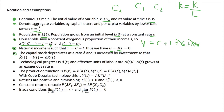We assume that the capital stock depreciates at a constant rate sigma and is increased by investment. The change in capital over time equals investment in that period minus depreciation of the existing capital stock. We can also write this as the law of motion of capital: the capital stock at time t+1 equals the capital stock at time t less depreciation, plus investment at time t.